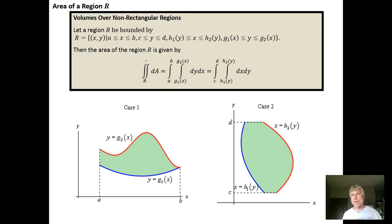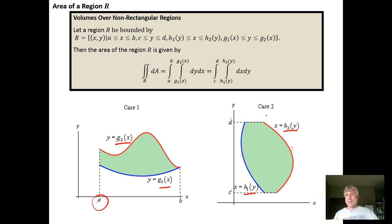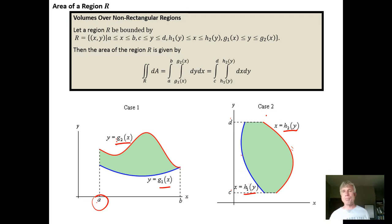To summarize, the key assumptions are that our functions are continuous over the indicated region. If we're running from A to B, we need G sub 1 and G sub 2 to be continuous as we run from C to D. In the next two videos, we'll do two examples: first, calculating the area of a rectangular region using an iterated integral, and second, calculating the area of a region bounded by continuous functions over a given interval.